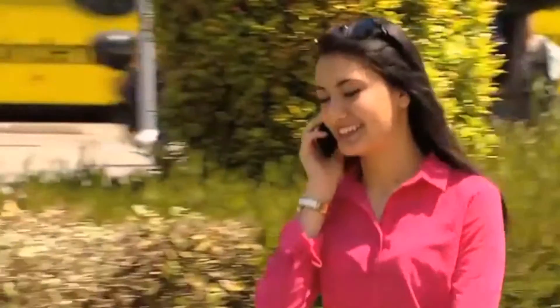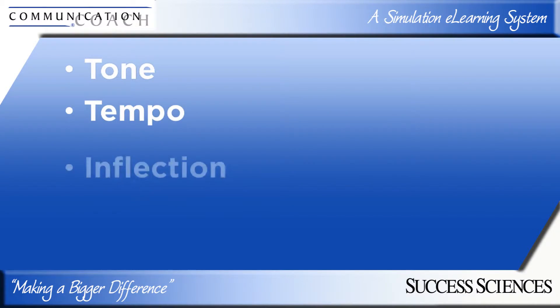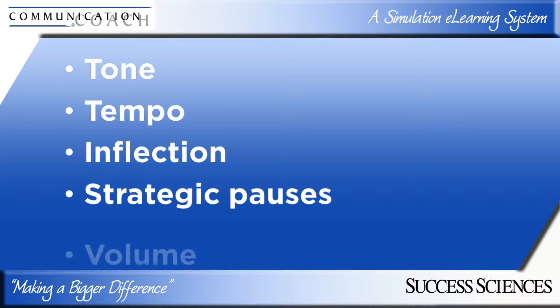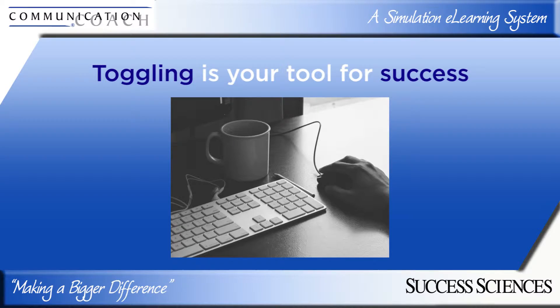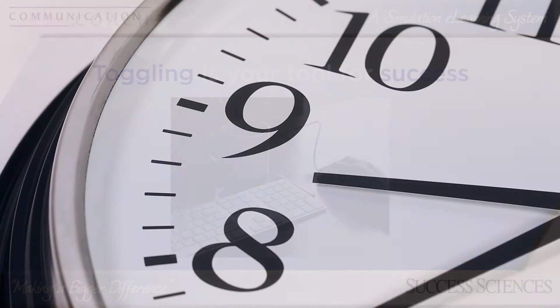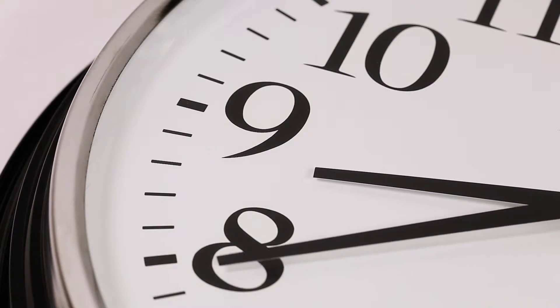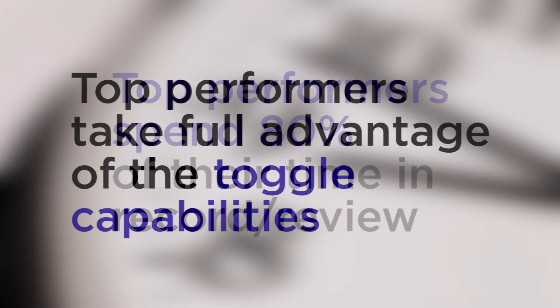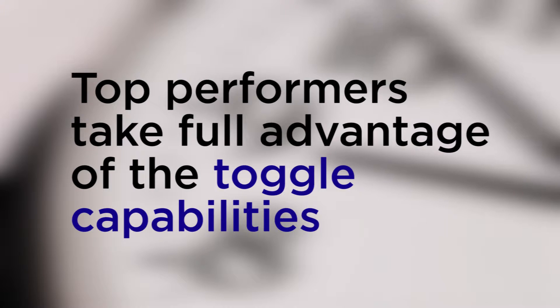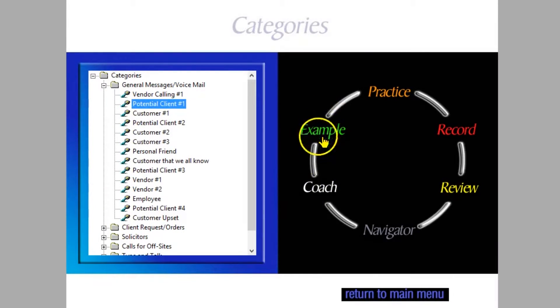How you say something is even more important than what you say. Knowing the right words is not enough to be a top performer. You must also master the vocal qualities of tone, tempo, inflection, strategic pauses, and volume to project the image of a confident professional. Toggling is your tool to perfect those skills. It is important to know that the most successful performers spend 80% of their time in record and review and consistently take full advantage of the toggle capability.